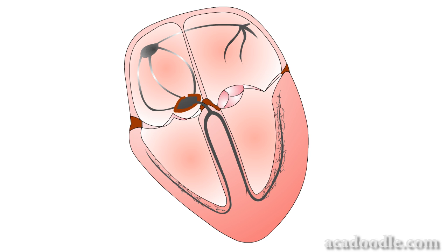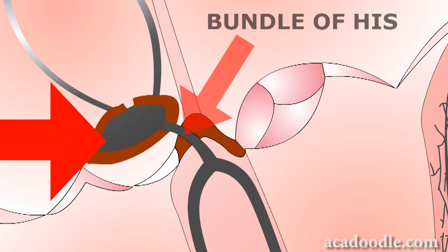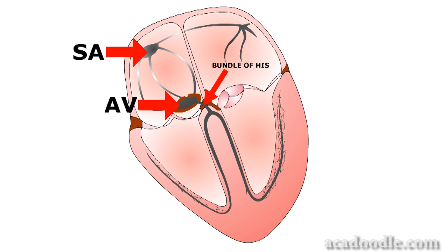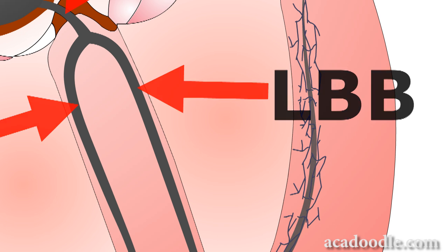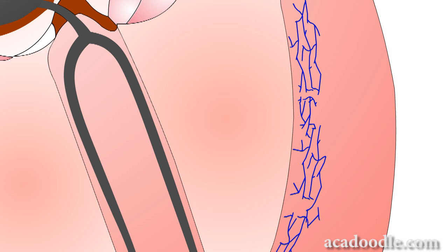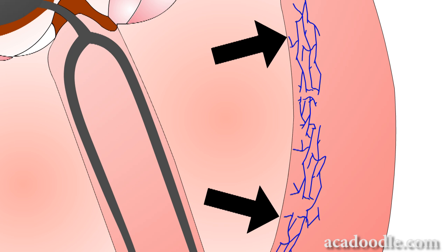The specialised cardiac conducting system is seen here in grey. The main components of the conducting system are the sinoatrial, or SA, node, situated near the entry of the superior vena cava into the right atrium, and the atrioventricular, or AV, node, leading into the bundle of Hiss. The bundle of Hiss lies in the interventricular septum, where it divides into right and left bundle branches. The right and left bundle branches give rise to a meshwork of terminal fibres in the subendocardium — that is, the myocardium closest to the ventricular lumina.